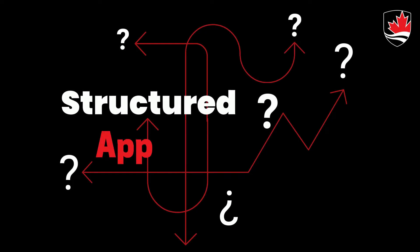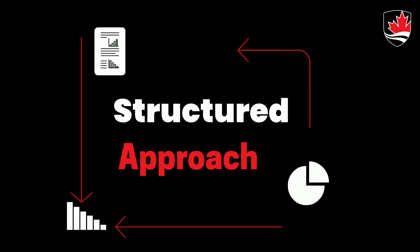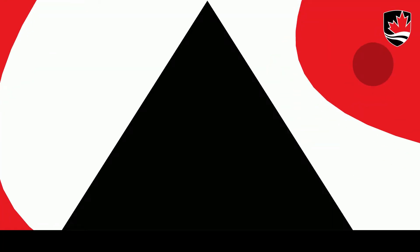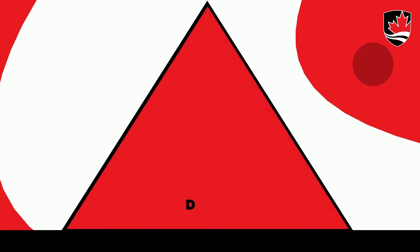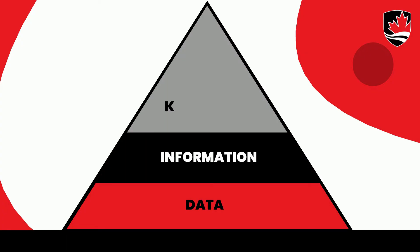The DIKW Pyramid offers a structured approach to understanding the transformation of raw data into readable, practical, and meaningful insights. The pyramid consists of four levels: first, data; second, information; third, knowledge; and fourth, wisdom. The visual of a pyramid reminds us that each level builds upon its preceding one, and that data must undergo transformation in order for us to properly learn from it.